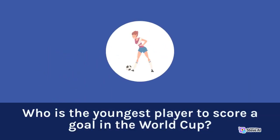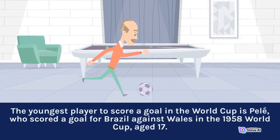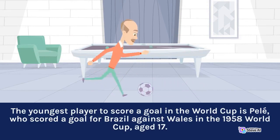Who is the youngest player to score a goal in the World Cup? The youngest player to score a goal in the World Cup is Pelé, who scored a goal for Brazil against Wales in the 1958 World Cup, aged 17.